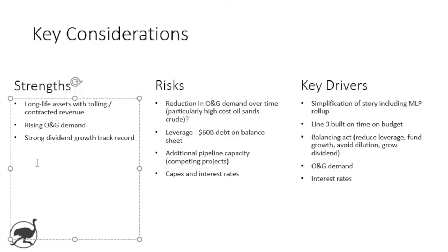A lot of crude is being transported by rail right now because there simply is not enough pipeline capacity. Another key strength is that Enbridge has a strong dividend growth track record going back many, many years — and it's in double digits per year. If you've held Enbridge for the last 10, 15, or 20 years, every year you're getting on average a 10-plus percent dividend increase, and that has driven huge shareholder value over time.